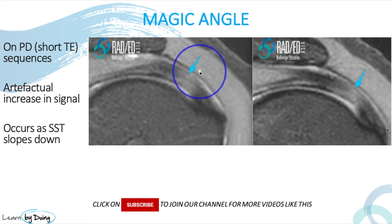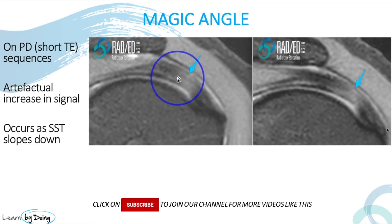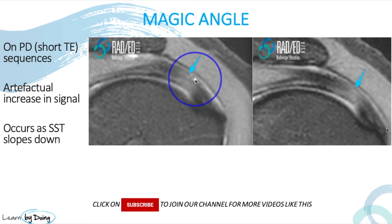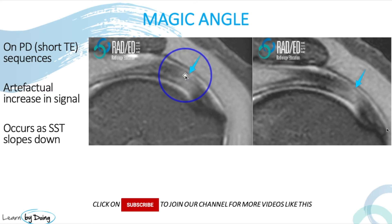We can get artifactual increase in signal — this is magic angle. On this PD fat sat there is increased signal present within the tendon. How do you know if this is magic angle? First, it occurs only on PD sequences — on T2 or T1 weighted sequences you won't see it. Second, it's the location: magic angle occurs where the supraspinatus tendon starts to curve down. You shouldn't expect to see magic angle further down or up because the angle is not right. Localized increased signal in that specific location suggests magic angle.